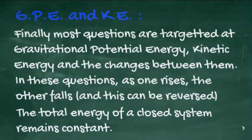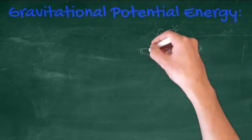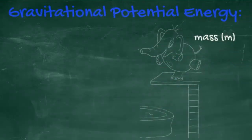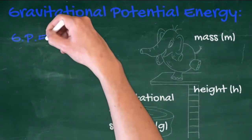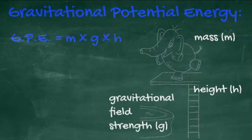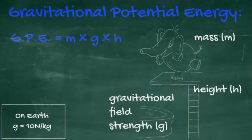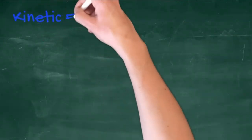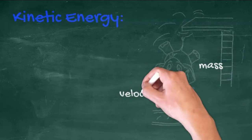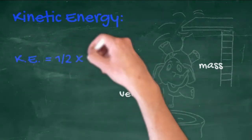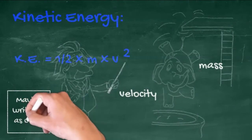Let's look at the two formulas. Gravitational potential energy is equal to mass times gravitational field strength times height. Gravitational field strength g on Earth is 10 newtons per kilogram. Kinetic energy is equal to half mass times velocity squared — don't forget the squared. Instead of putting a half, consider using 0.5.